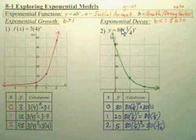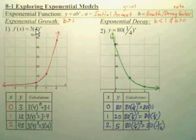The first value is what you begin with — so the 3 is what you begin with here, we start at 3; we start at 80. And then this is your B, what you're growing or decaying by. Make a little table, make your graph, and you're good to go.